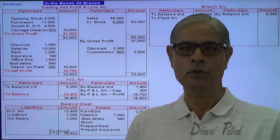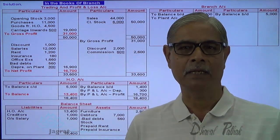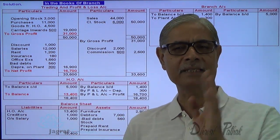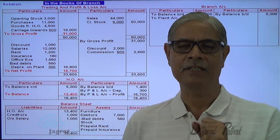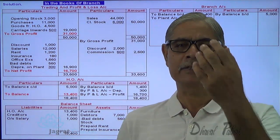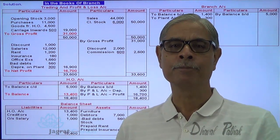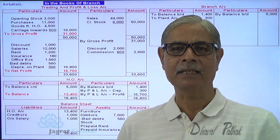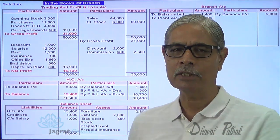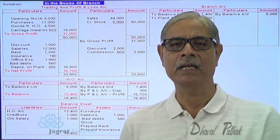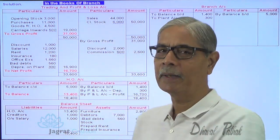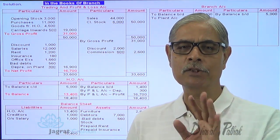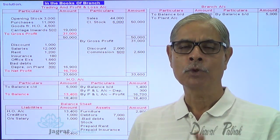Now for the absorption entry: HO must assume all trading activity, profit and loss account transactions, and all assets and liabilities of the branch. All the profit and loss account expenses and income done by the branch at the instance of HO must be absorbed by HO. Branch trading account and branch profit and loss account are prepared in the books of HO for this purpose.